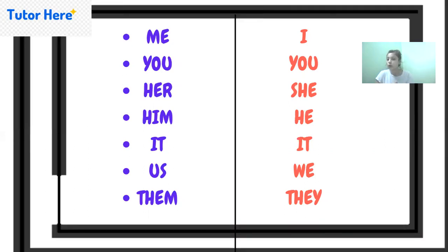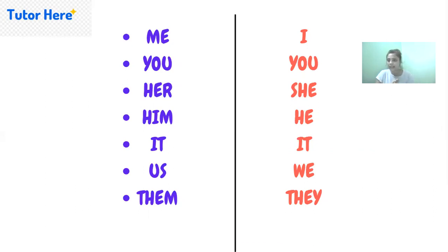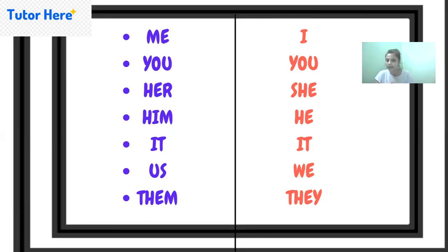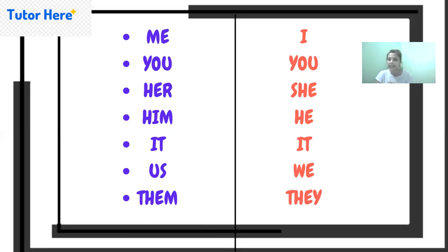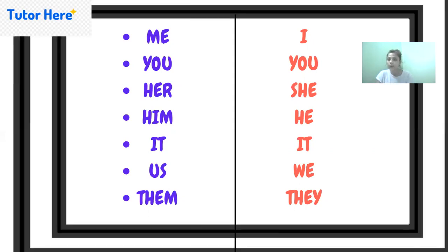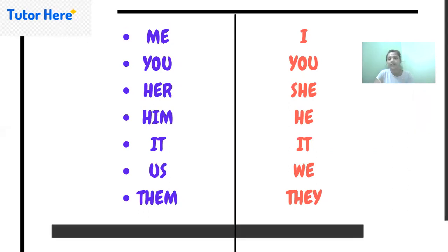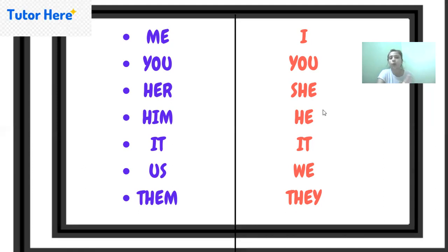There is no change in the pronoun 'it'. For 'us' — if you get 'us' in active voice it becomes 'we' in passive voice, and vice versa. The same goes for 'them' — if you get 'them' in active voice it becomes 'they', and if you get 'they' in active voice you get 'them'. You need to memorize this table.